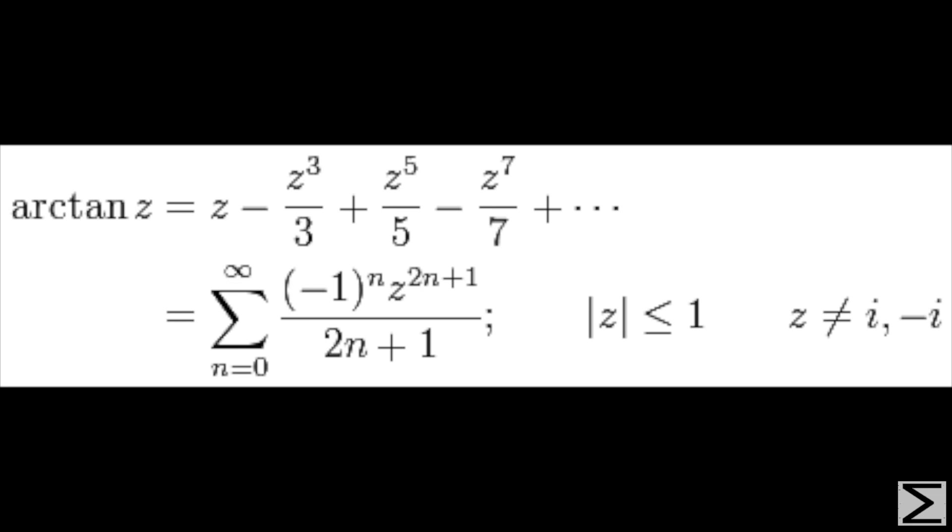He was also able to derive an infinite expression for the arctangent of theta, which is equal to the alternating infinite series: theta minus theta cubed over 3 plus theta to the fifth power over 5 minus theta to the seventh power over 7 and so on.